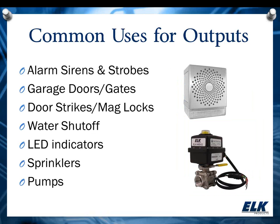I'm going to start out by listing some common uses for outputs. As Jessie said, you can use those for alarm sirens and strobes, things like garage doors or gates. They can be used in access control applications for things like door strikes or mag locks. You can also use that for a water shutoff — we have our new water shutoff valve, the ELK WSV2. You can also do things like LED indicators, sprinklers, pumps, pretty much anything you're wanting to control through power, whether that be low current or using relays to switch higher current power to other devices.